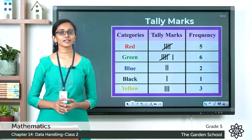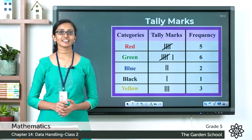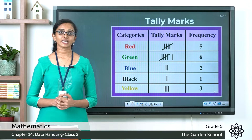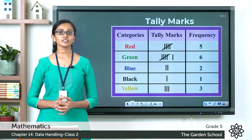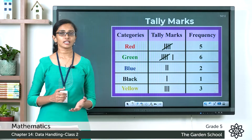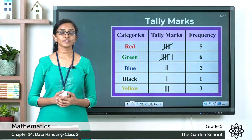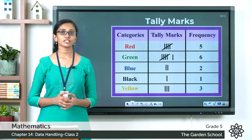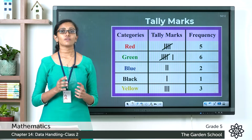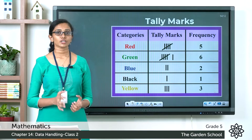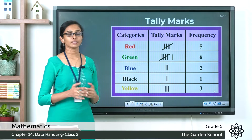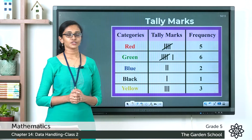Good morning Grade 5, welcome back to Grade 5 Mathematics class. Today we'll learn the next method of data representation called tally marks — tally charts that use tally marks to represent data. The number of times a data item occurs is called its frequency. In a tally chart, the frequency of a data item is shown using lines called tally marks.